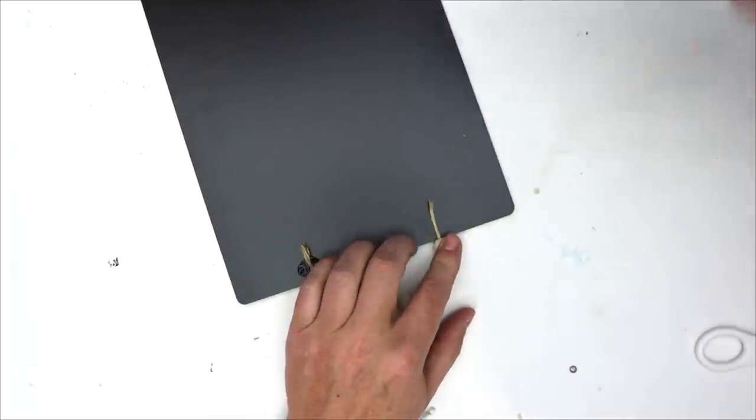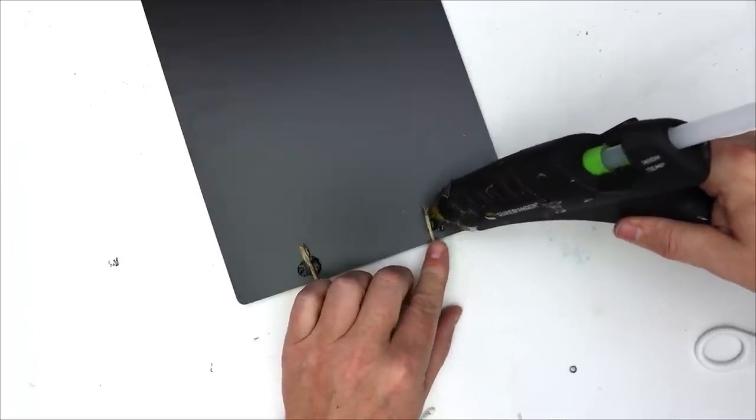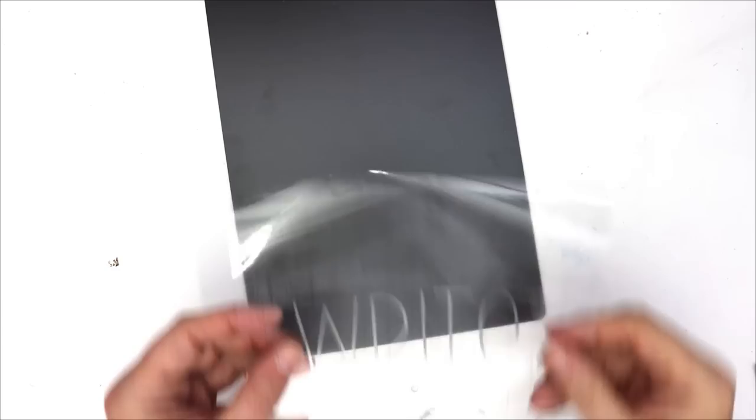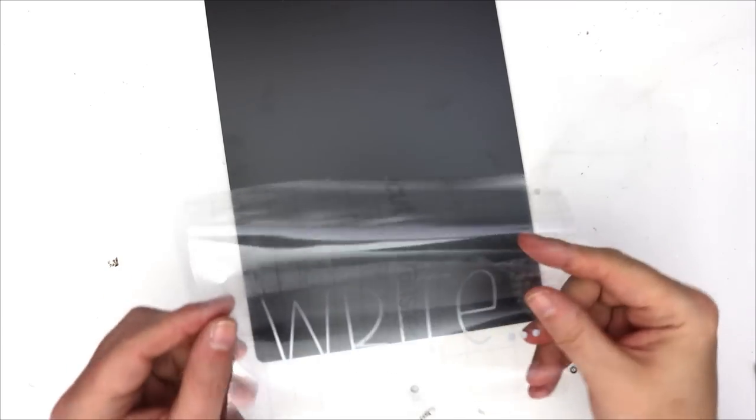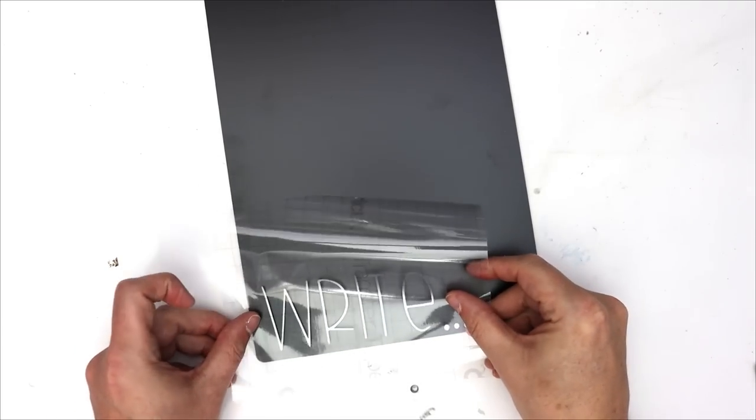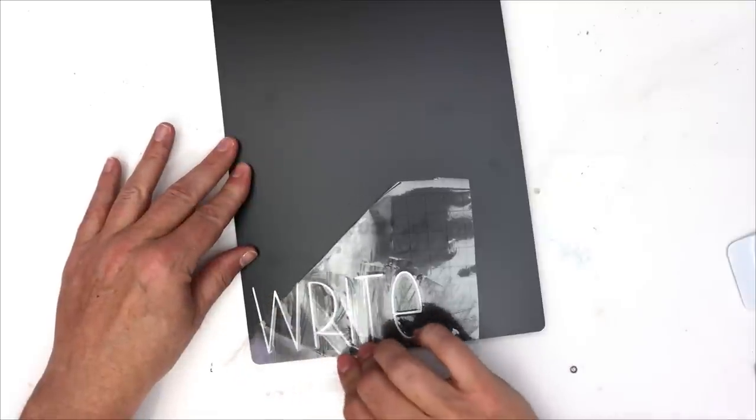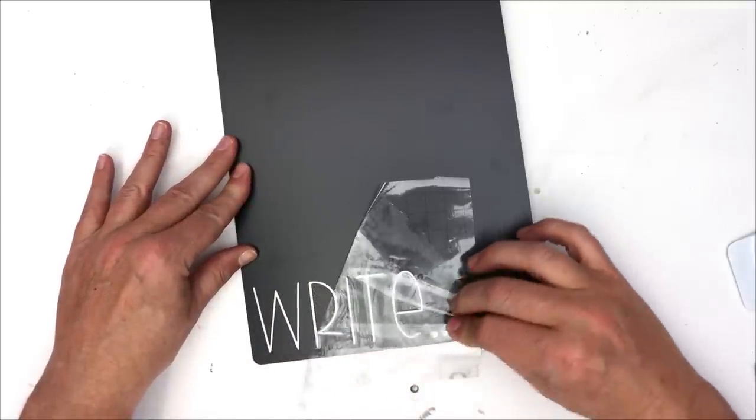I like to kind of sink my rope in there and then just add some tape on the back. Now for my decal here, I did use my Cricut once again and just wrote out the letter right or the words right. I wrote the word right.